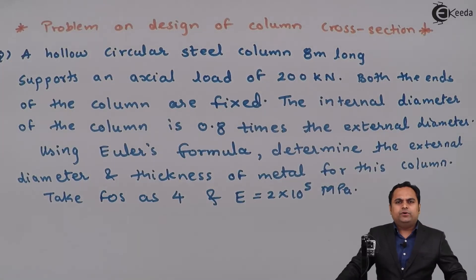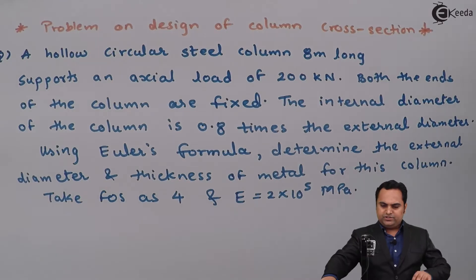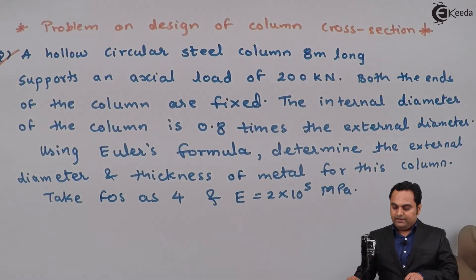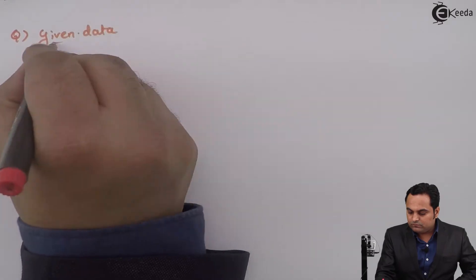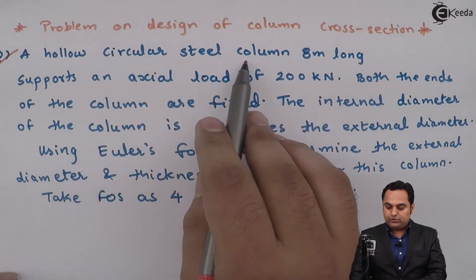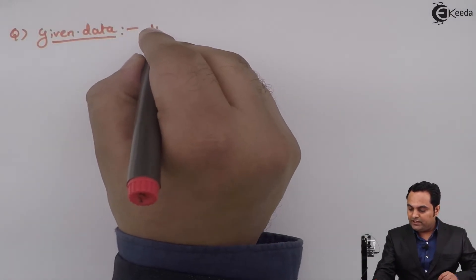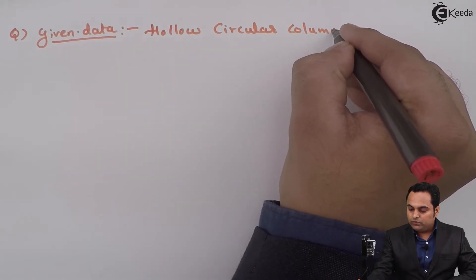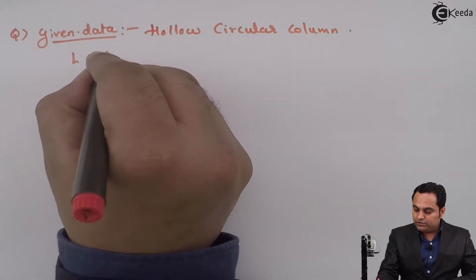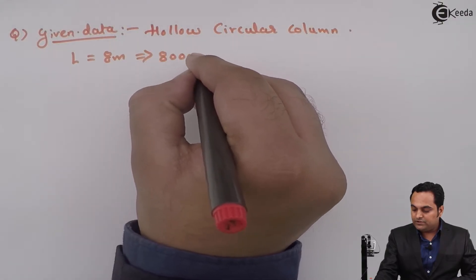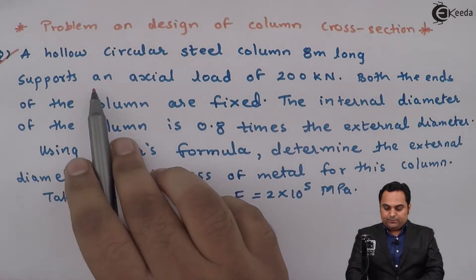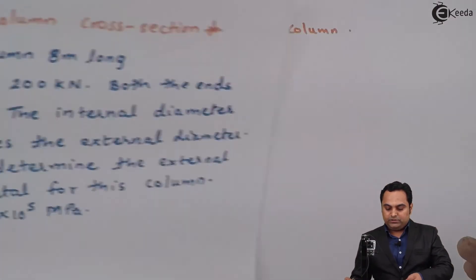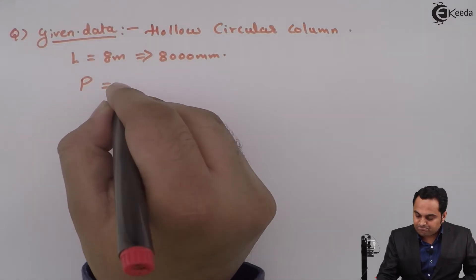In this video we are going to design the dimensions for a given column. A hollow circular steel column is eight meters long, so the length of the column is 8000 mm. It supports an axial load of 200 kilo Newton, which is 200 × 10³ Newton.